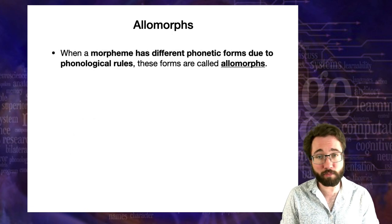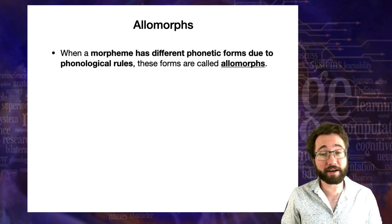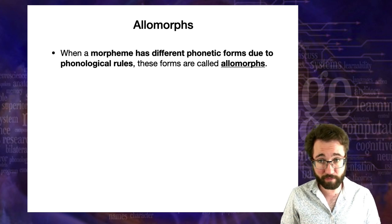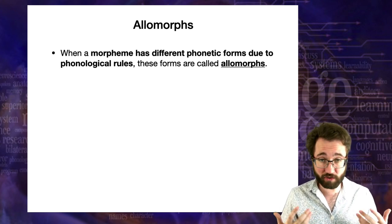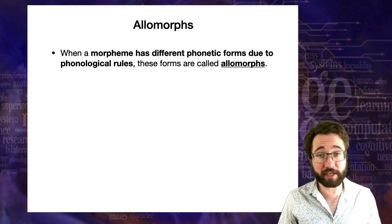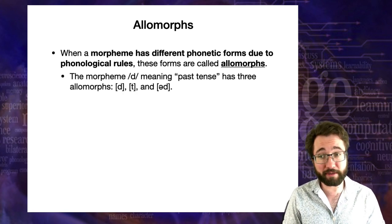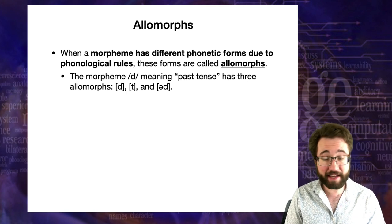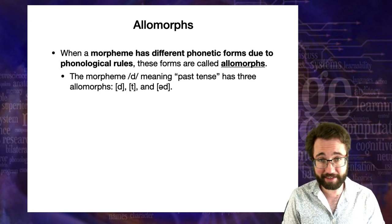Once we take these rules into account, we see there is in fact only one past tense morpheme in English, and it's D. It has three different phonetic forms — D, T, and UD (with the epenthetic vowel). When a morpheme has different phonetic forms depending on the phonetic form of the root or due to phonological rules, these forms are called allomorphs. The morpheme D, which means past tense, has three allomorphs: D, T, and UD.